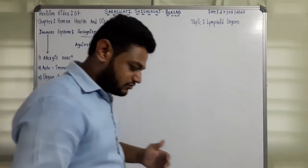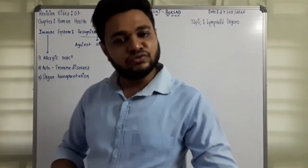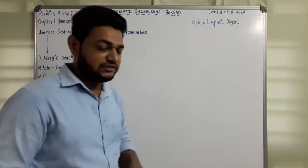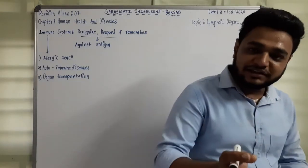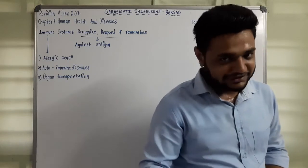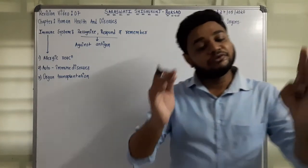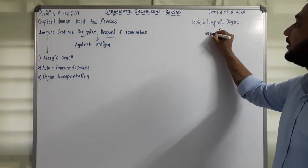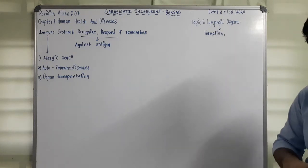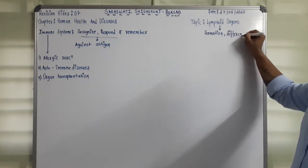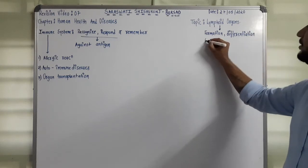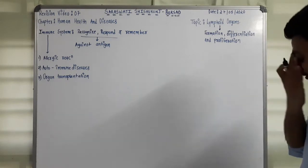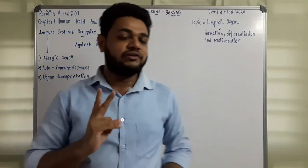The immune system is provided to us by lymphoid organs, certain cells, certain tissues, and other antibodies that are proteins. Lymphoid organs are those organs where origin, differentiation, and proliferation of lymphocytes occurs — these three things.